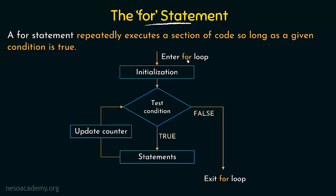We entered the for loop — we call it a loop because it is going to be executed again and again. In the for loop we have something known as the initialization, which was something that was missing in the while loop. In the for loop we initialize a variable, and then we have the test condition. If the test condition is true, the statements within the for statement will be executed, and then there will be an update counter.